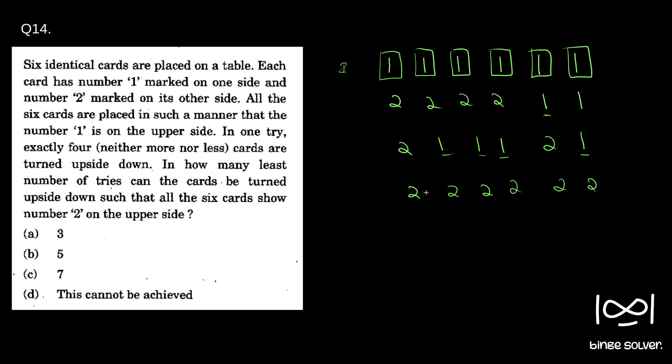So question is in how many least number of tries can the cards be turned? So this is our first try. This is our second try. And this is our third try. In third try, we got all twos on the upper side. So our answer is A. Question 14A is the solution.